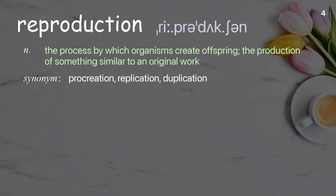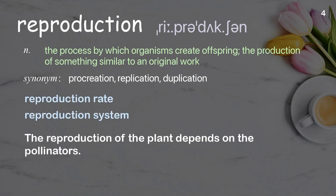Reproduction: the process by which organisms create offspring; the production of something similar to an original work. Examples: reproduction rate, reproduction system. The reproduction of the plant depends on the pollinators.